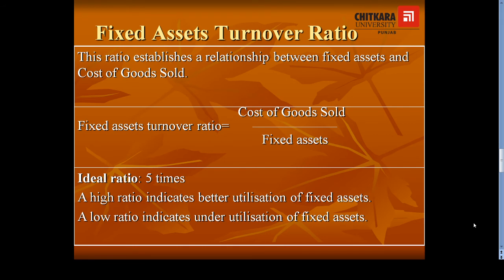The fourth activity ratio is Fixed Assets Turnover Ratio. This ratio establishes a relationship between fixed assets and cost of goods sold. The formula for calculating Fixed Assets Turnover Ratio is cost of goods sold divided by fixed assets. Cost of goods sold will be calculated by applying the formula: opening stock plus purchases plus direct expenses minus closing stock.